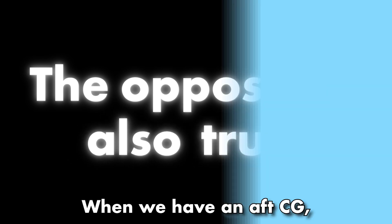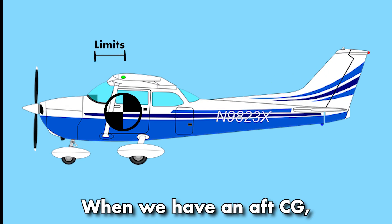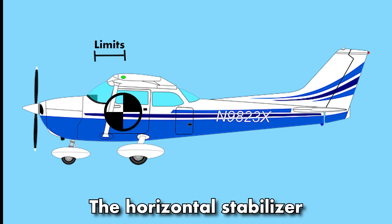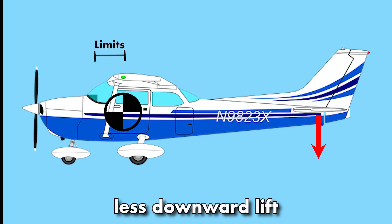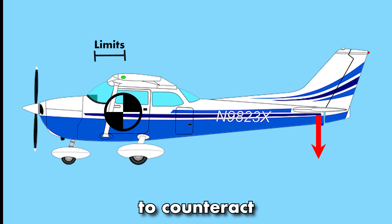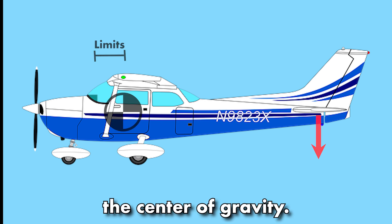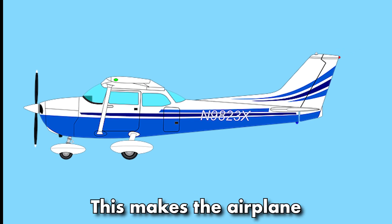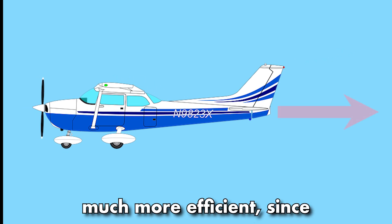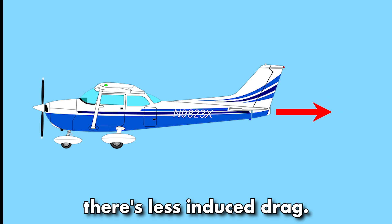The opposite is also true. When we have an aft CG, the horizontal stabilizer has to create less downward lift to counteract the center of gravity. This makes the airplane much more efficient since there's less induced drag.